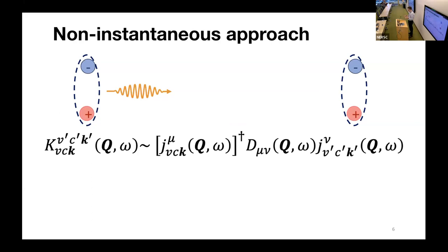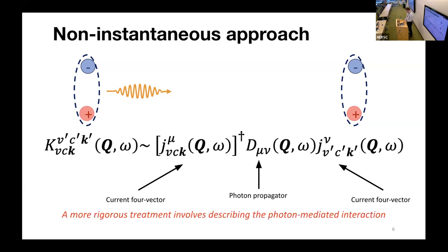Now our interaction kernel is much more complicated, and we see we have to use relativistic terms, including the current four-vector, the photon propagator, and another current four-vector. It also depends on the wave vector and the frequency of our photon mediating the interaction.